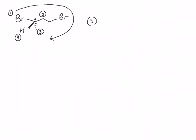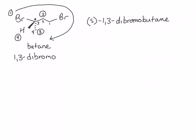You could also make a model and turn it so that the hydrogen is pointing away from you, or you could redraw the molecule. Whichever way makes the most sense to you is the one you should use. Now let's name this molecule. It has four carbons as its longest chain, making this a butane. We have two substituents, both bromines. Starting numbering on the right side gives substituents at positions 1 and 3, the lowest possible. So the name of this compound is S-1,3-dibromobutane.